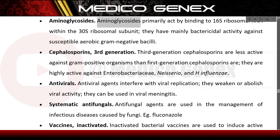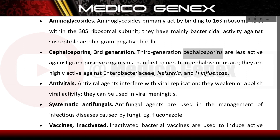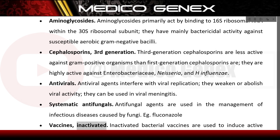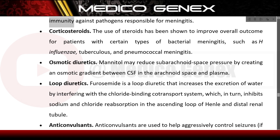Aminoglycosides act by binding to 16S ribosomal RNA within the 30S ribosomal subunit, providing bactericidal activity against susceptible aerobic gram-negative bacilli. Third-generation cephalosporins are less active against gram-positive organisms but highly active against Enterobacteriaceae, Neisseria, and H. influenzae. Antiviral agents interfere with viral replication and can be used in viral meningitis. Antifungal agents such as fluconazole are used for fungal meningitis. Inactivated bacterial vaccines are used to induce active immunity against pathogens responsible for meningitis.